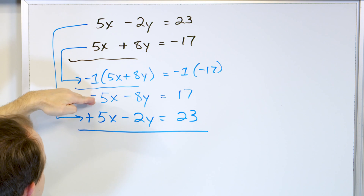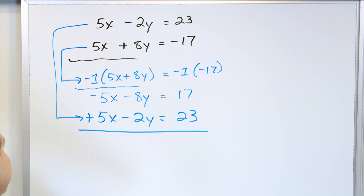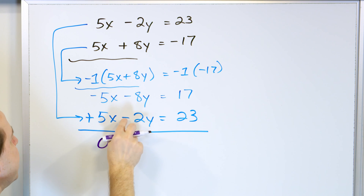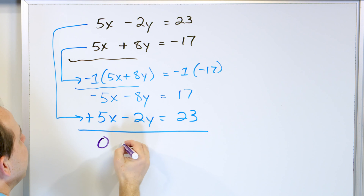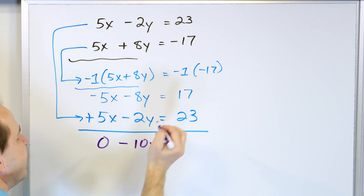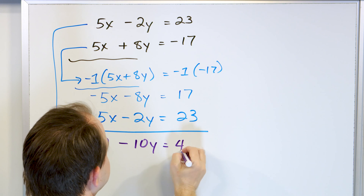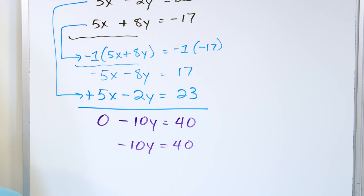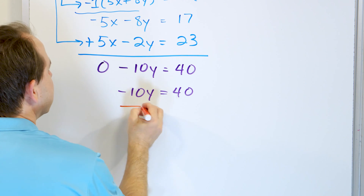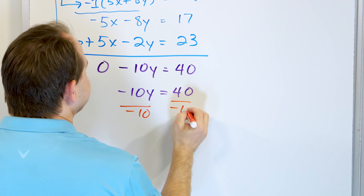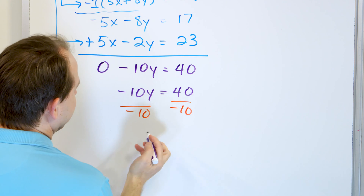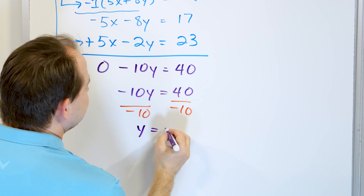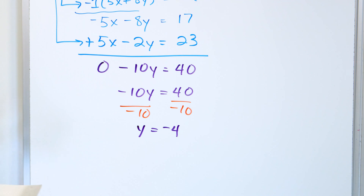Negative 5x plus 5x is 0. Negative 8y plus negative 2y is negative 10y. And 17 plus 23 is 40. So we have negative 10 times y equals 40. Dividing by negative 10, the 10s cancel and the negatives cancel, giving y equals negative 4.